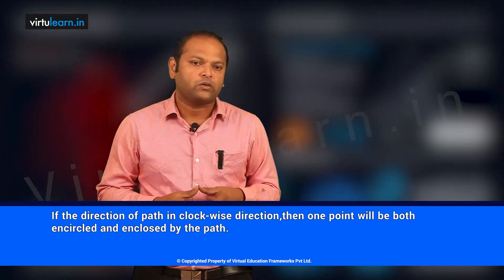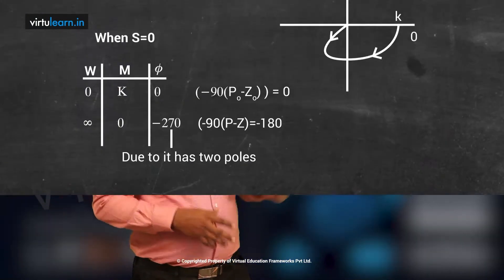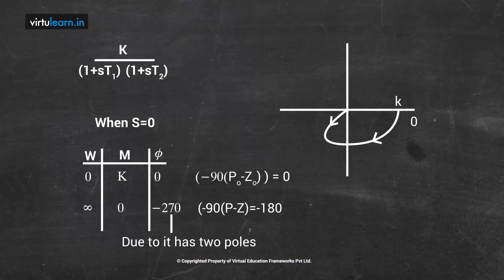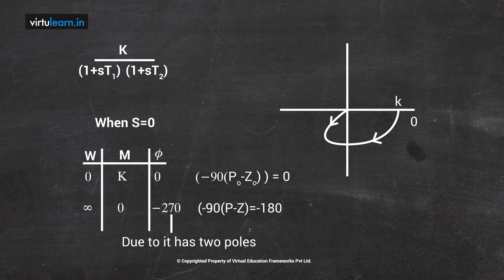So if the direction of the path is clockwise, the point is both encircled as well as enclosed by the closed path. Now let us look at poles and zeros of the system and explain using the Principle of Argument. Let us take a function f(s) which has poles and zeros — P1, P2, Z1, Z2, and so on. We can choose any arbitrary contour, which is a closed path in the clockwise direction.